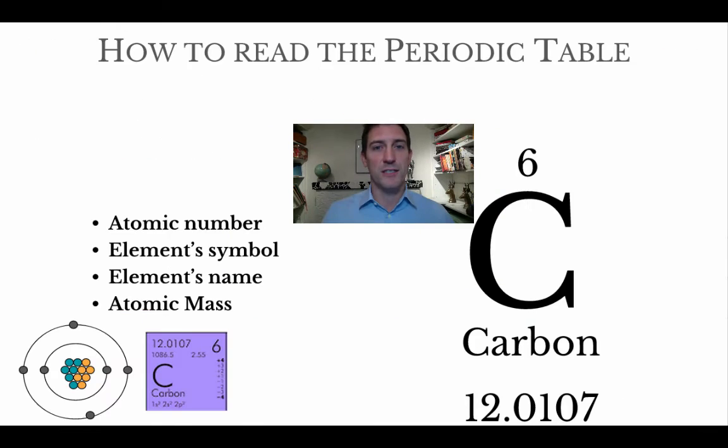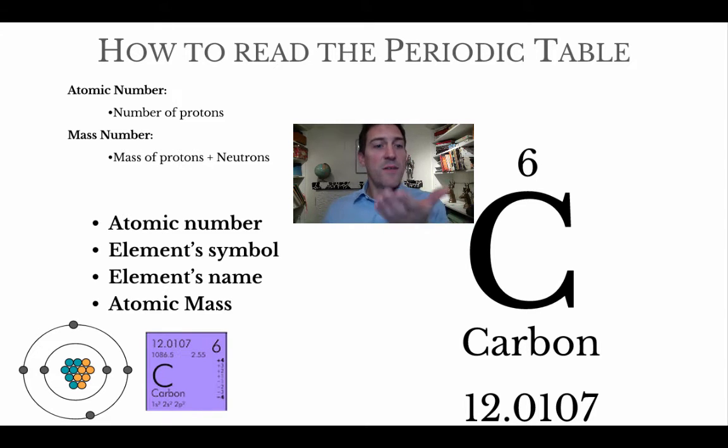So how do I read the periodic table? I pulled carbon off so we can see it a little better. The atomic number, number six for carbon, is the number of protons in the nucleus. Carbon anywhere you find it is going to have six protons, that's how it got its name. Anything with six protons has to be carbon. The mass number, also called the atomic mass depending on the periodic table, is the mass of the protons plus the mass of the neutrons inside the nucleus.